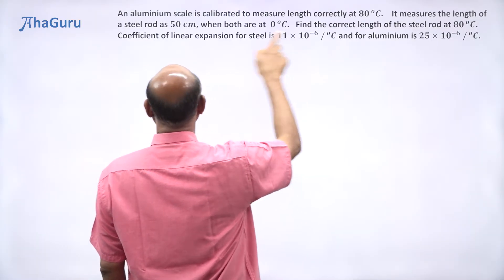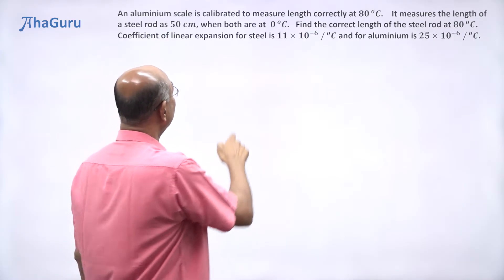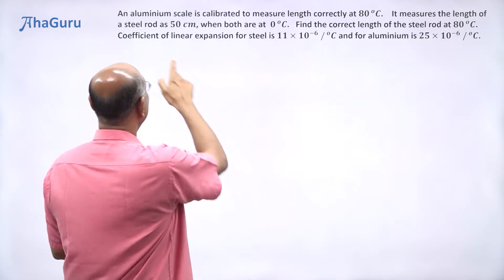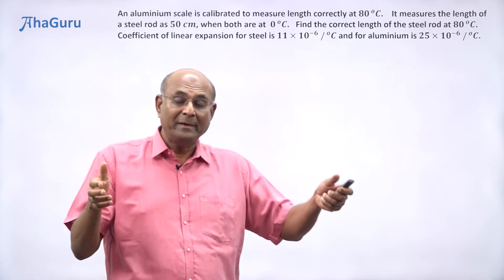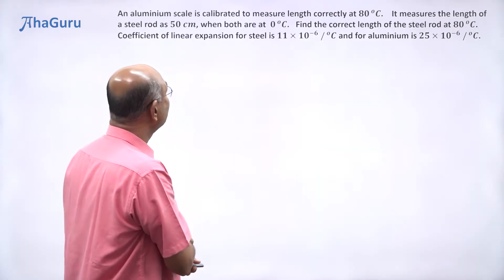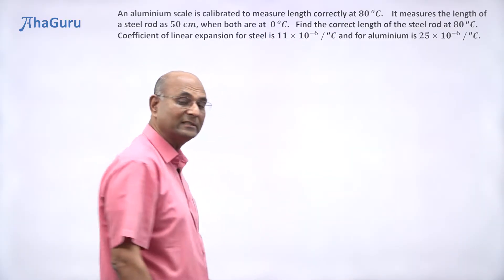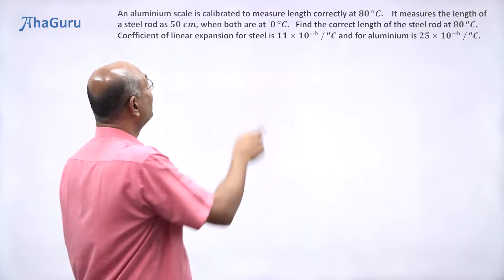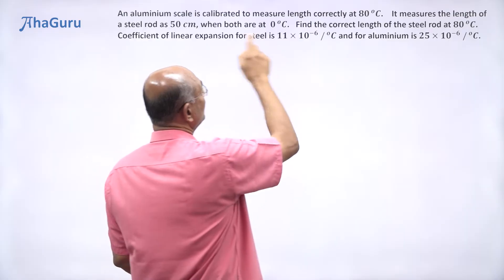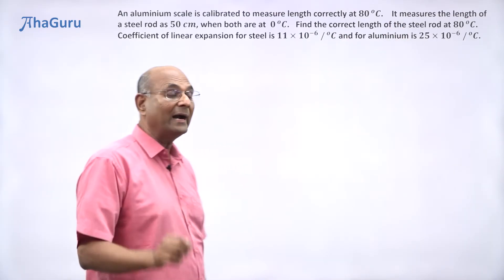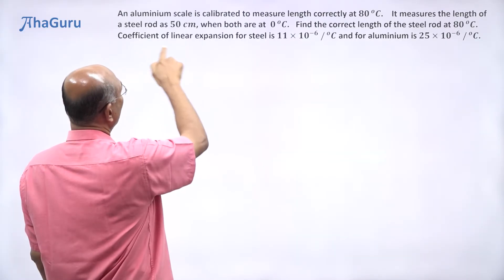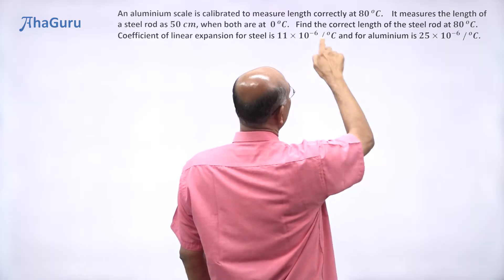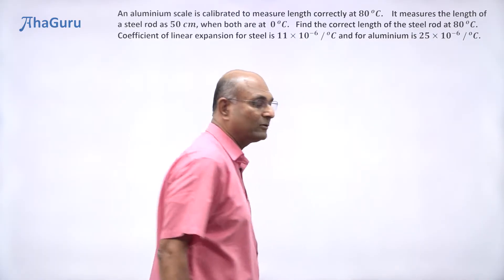Now the scale is used to measure the length of a steel rod and it shows it as 50 centimeters when both are at 0 degrees Celsius. Does it mean that the length of the steel rod is actually 50 centimeters? No, because the aluminum scale would have shrunk, so it is not measuring it correctly at 0 degrees Celsius. We have been given the coefficient of linear expansion for steel — 11 × 10⁻⁶ per degree Celsius — and for aluminum — 25 × 10⁻⁶ per degree Celsius. They are not the same.